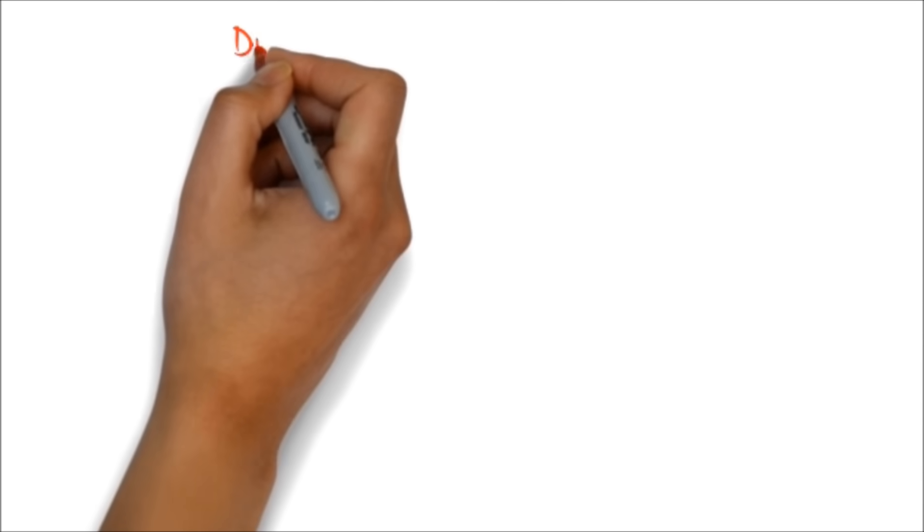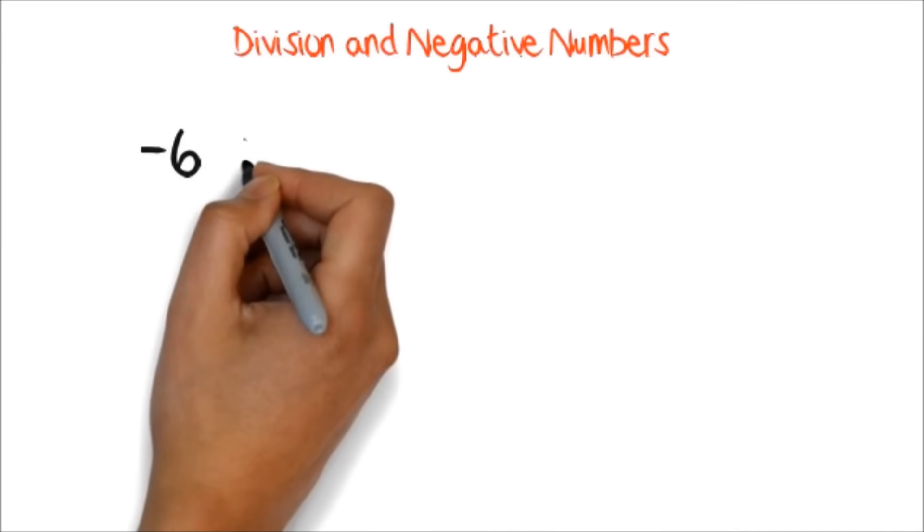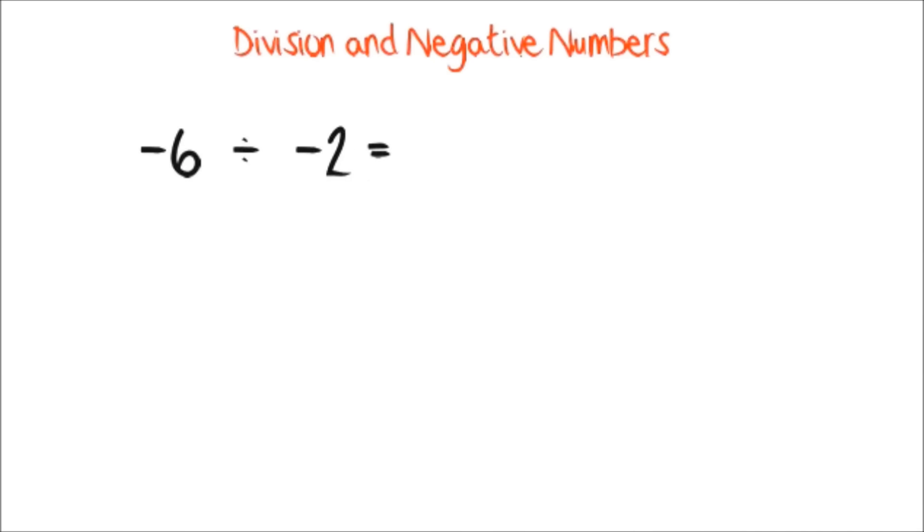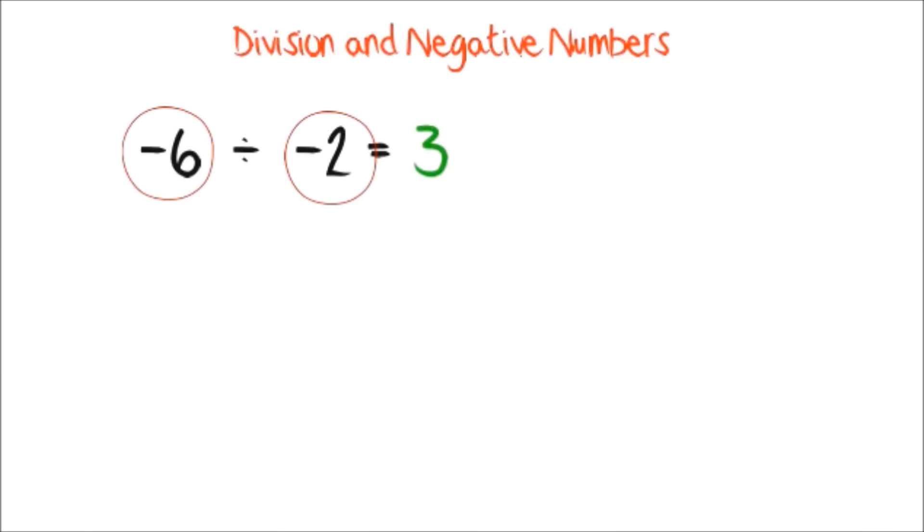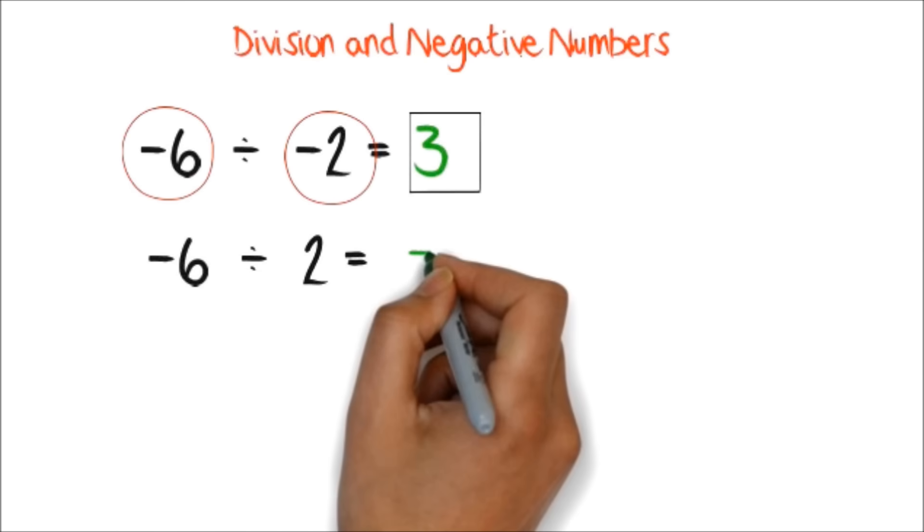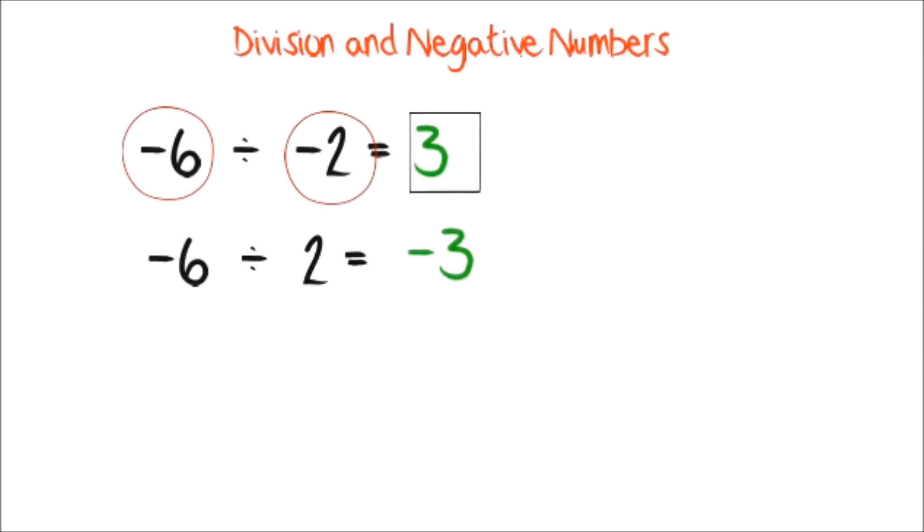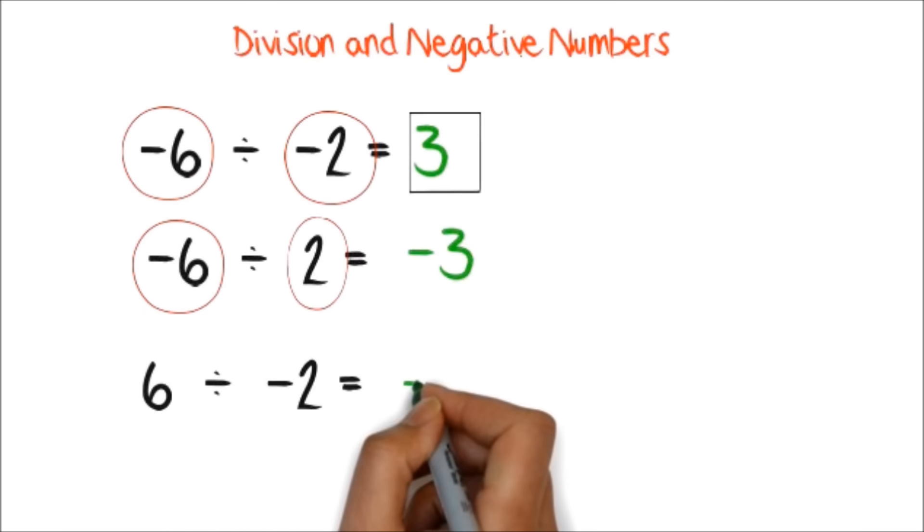The exact same idea applies to division. We say, negative 6 divided by negative 2 equals 3. Notice, we worked with two negative numbers, and our final answer is positive. When we divide negative 6 by 2, we get our final answer to be negative 3. Here, one of the numbers is negative, and the other is positive.